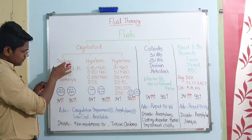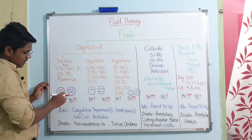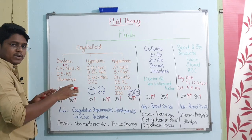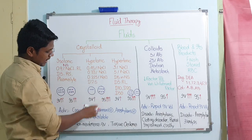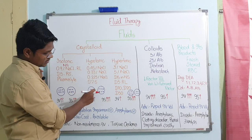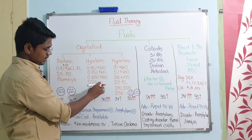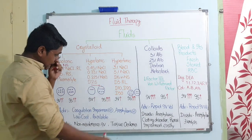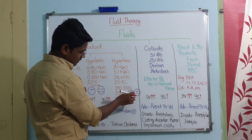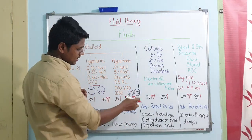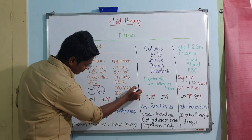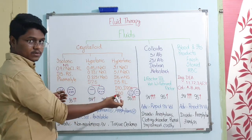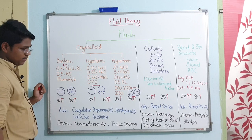Now we will understand how they work. Isotonic solution - the solute concentration matches the cell, so the movement of water will be balanced. In case of hypotonic, the solute concentration in solution is less whereas in the cell it is more, so water will transfer from solution into the cell. In case of hypertonic, the solute concentration in the solution itself is very high whereas in the cell it is low - so it will extract water from the cell into the solution.